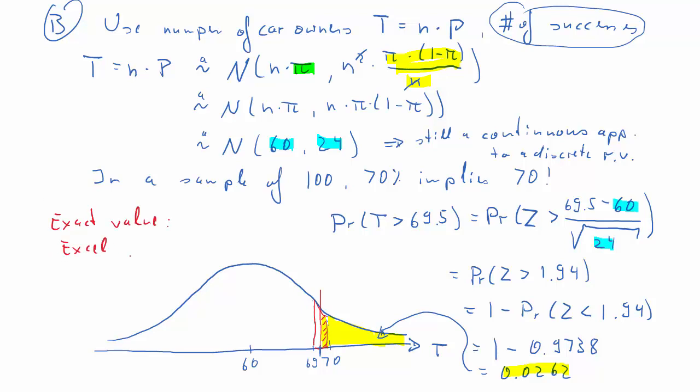Now, if you do exact binomial probability calculations, and you can do that in Excel, you use the function BINOM.DIST to do that. If you try it in Excel, it needs inputs, it needs 69.